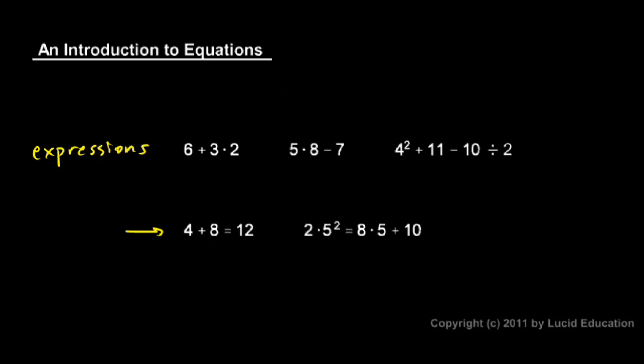In the second row you notice something different. Here's an equal sign. 4 plus 8 equals 12, and over here 2 times 5 squared equals 8 times 5 plus 10. Both of these are equations.